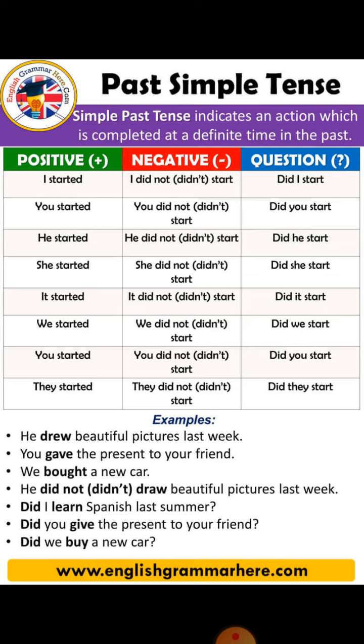Other examples: He drew beautiful pictures last week. You gave the present to your friend. We bought a new car. Negative: He did not draw beautiful pictures last week. Did you give the present to your friend? Did we buy a new car?